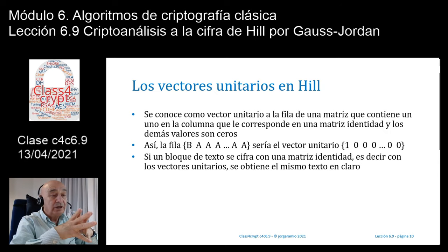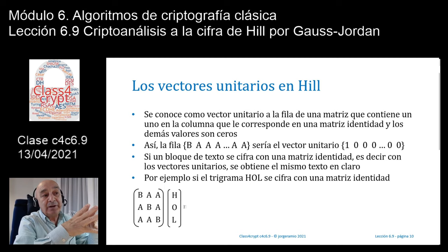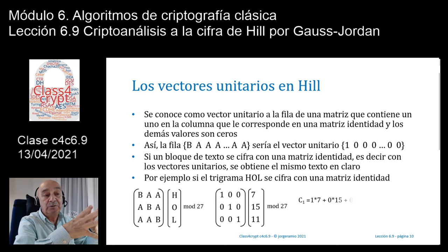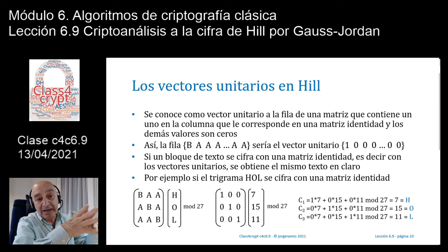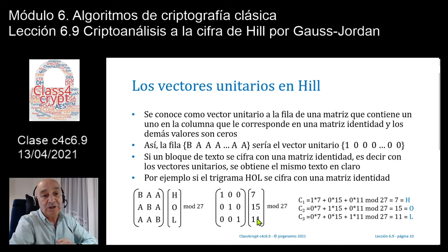¿Qué sucede si un bloque de texto en claro de n×n, de 2×2, de 3×3, de 4×4, como se hace en la cifra de Hill, lo cifro con una matriz de identidad donde son todos los vectores unitarios? Por ejemplo, con el trigrama HOL, si multiplicamos la primera fila 1, 0, 0 por la columna 7, 15 y 11 del texto en claro, obtenemos 1×7 + 0×15 + 0×11 = 7, que es la H. Del mismo modo, la segunda fila 0, 1, 0 produce el 15 que corresponde a O, y la tercera fila 0, 0, 1 produce el 11 que corresponde a L. Cifrar con la matriz de identidad devuelve exactamente el texto en claro.